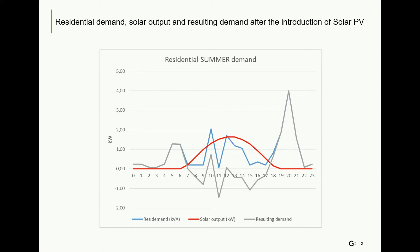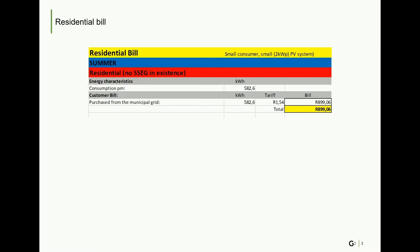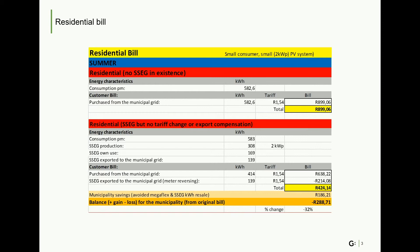This slide shows what happens to demand after the introduction of SSEG. Household original demand is still represented by the blue line, but because of electricity generated by solar PV, demand from the municipality falls. The red line shows electricity produced from solar PV and the grey line shows resulting household demand. Where demand is negative, electricity is fed onto the grid. Before solar PV, this household's bill is R899, which is a flat rate of R1.54 multiplied by their consumption of 582 kWh per month. The relevant tariff is an inclining block tariff and the average rate of R1.54 was calculated using the model. If the household installs solar PV and there are no SSEG tariffs in place — net metering — the default situation is that the meter spins backwards when electricity is exported onto the grid, and the household is compensated at an average rate of R1.54. In this situation, the municipality would incur a loss of R288 from that customer.